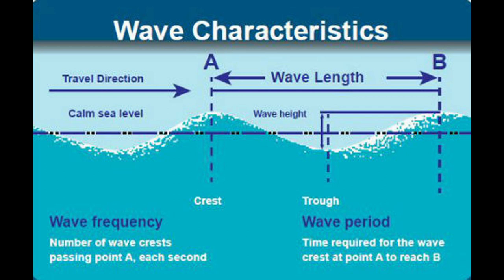The term you hear more often is the wave period, and that's the time required for two consecutive wave crests to pass a given point. The lower the period the rougher it is. You can never look at just the wave height when assessing conditions — you have to consider both the wave height and the wave period. Without both you've got no idea what's happening out there.